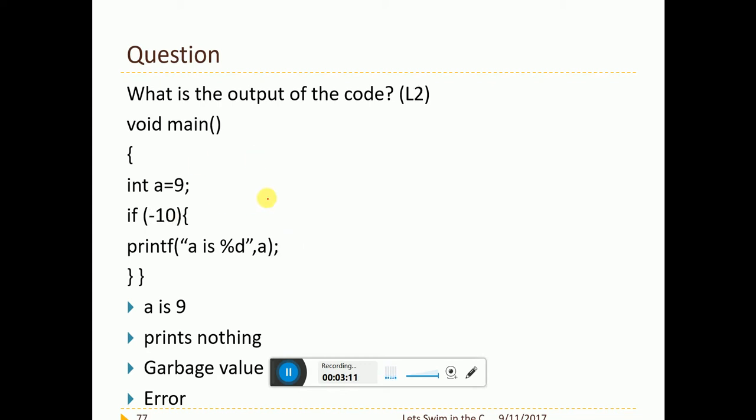If of minus 10. Well, this is an interesting question. How does it work? Simple. Any non-zero value will be indicated or will be conveyed as a positive true state. For example, if it is minus 10, if of minus 10, that will also be taken as positive value and it will be executed. So the loop will get in normally and it will go here. So this line will be run. So a is 9 is the output.